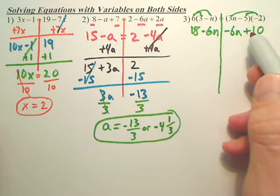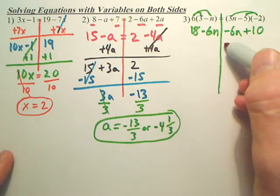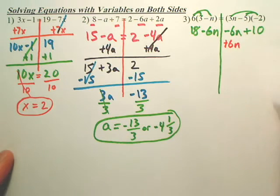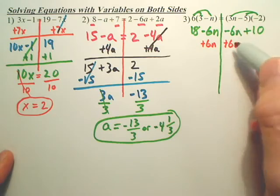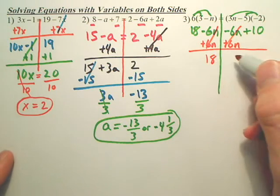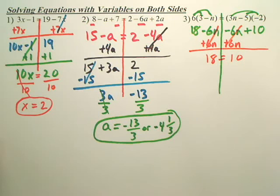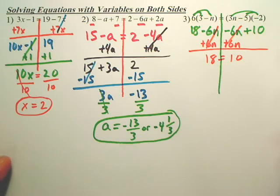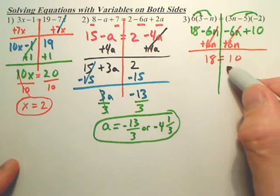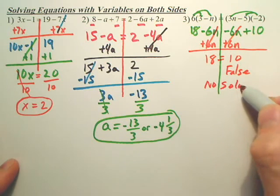So our next job is to move the n's to one side, preferably the left side. So to get rid of this minus 6n, you're going to add 6n because it's the opposite. That cancels. Wait, what happens here? That's gone. All my n's disappear. I can't solve anything, I'm done. They fall apart. Now is this a true or false statement? Does 18 equal 10? That is false, right?